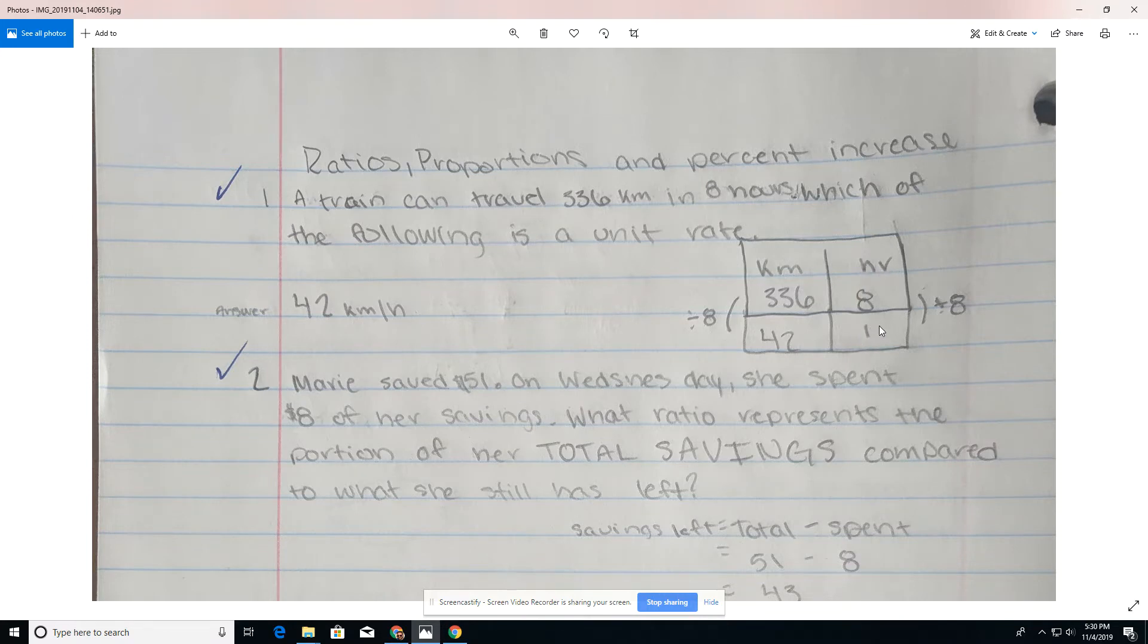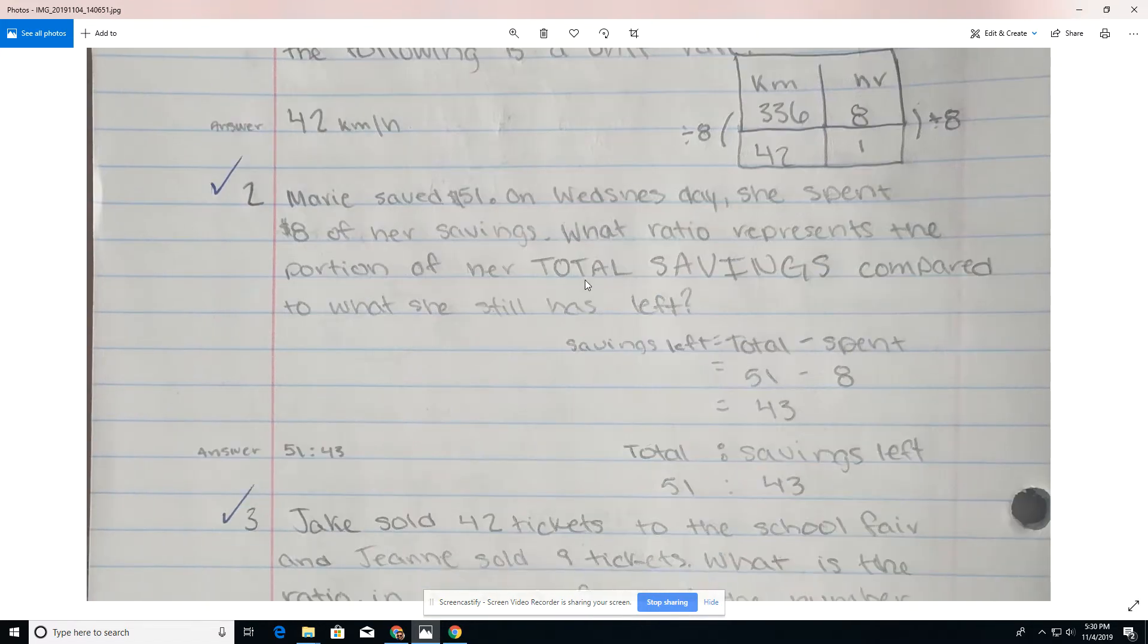And then we got to decide what we're being asked. Which of the following is a unit rate? So what was missed by this student is that there was additional text here that said kilometers per one hour. So we go ahead and put one in the hour column here. And then we just got to figure out what factor do we multiply or divide by to get from eight to one. So we can divide by eight or multiply by one eighth. Either way, it's the same thing. And we'll get from eight to one, which means we do the same thing on this side and discover that the train is traveling at 42 kilometers for every one hour.